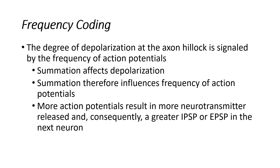Action potentials are all-or-nothing. They are all identical — always the same amplitude, never larger, never longer, always the same duration. So the way we can determine different types of signals is by manipulating how quickly we fire those action potentials. In other words, the frequency of those action potentials, and that is called frequency coding.